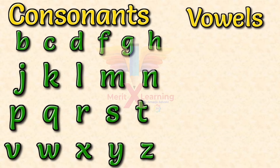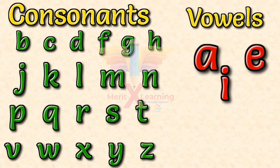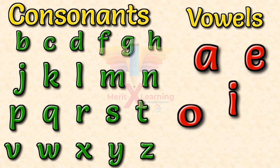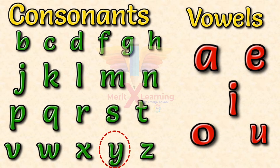And the vowels are A, E, I, O, and U. Sometimes the letter Y is also a vowel because of the sound it makes in certain words. You will learn more about the sounds these vowels make in the video called Vowel Sounds.